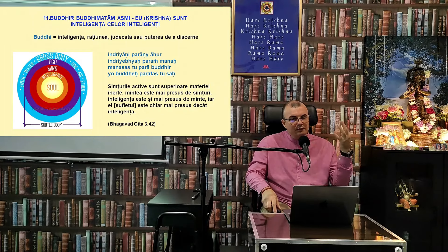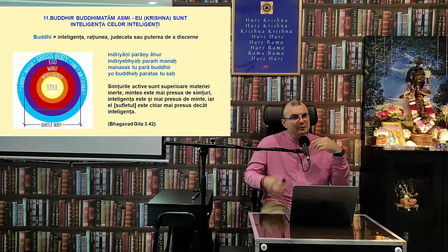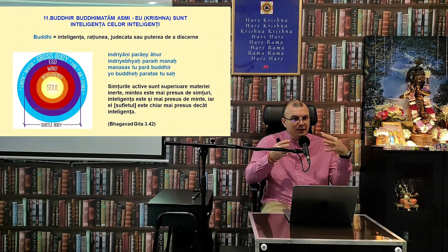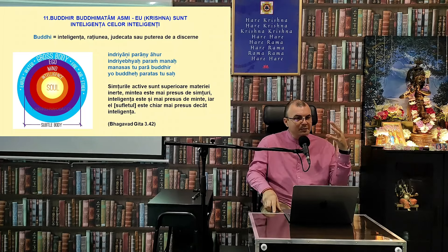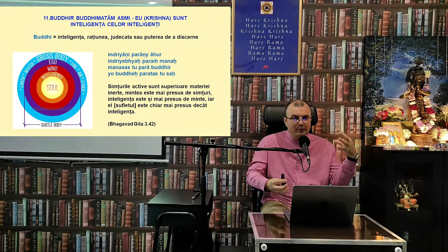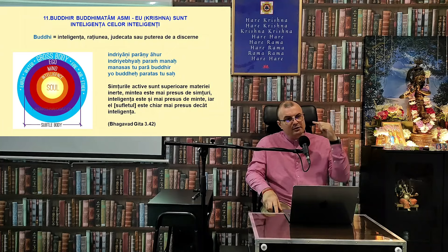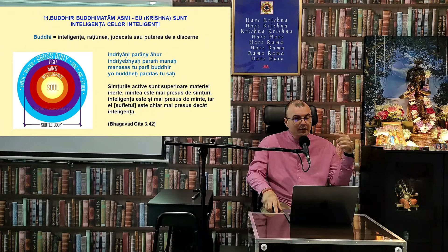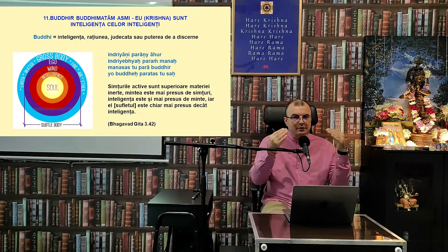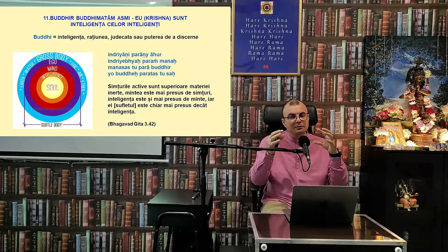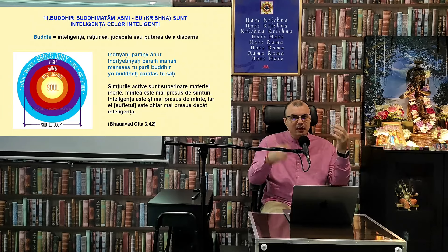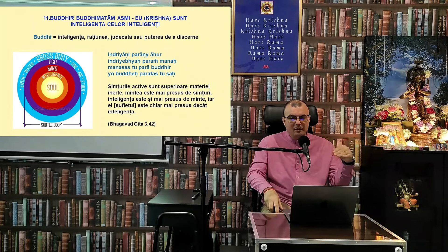De exemplu, ochii noștri văd o cutie cu înghețată — simțurile devin imediat atrase, nasul simte mirosul de vanilie, limba, stomacul — se începe procesul, mintea vrea o tonă de înghețată. Intervine inteligența și spune: dacă mânânci o tonă de înghețată, te îmbolnăvești cu siguranță. Inteligența este abilitatea conștiinței noastre de a evalua lucrurile, de a vedea ce este bine și ce este rău pentru tine. Când inteligența este slabă, mâncăm o tonă de înghețată și ne îmbolnăvim.